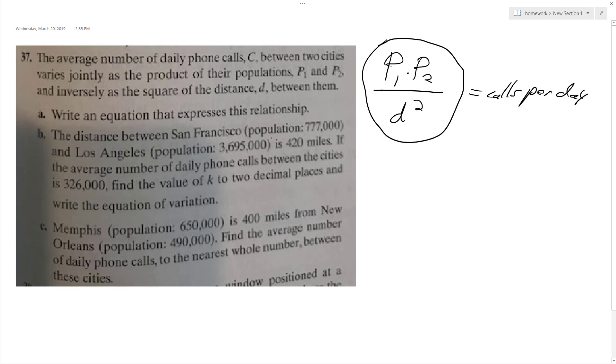So then the distance between San Francisco and Los Angeles is 420 miles. The average number of phone calls between the cities is 326,000 to find the value of k. Alright, so we're looking for a constant here, so I can probably add a constant. So constant is going to be equal to k times 770,000 times 3,695,000 all over 420 squared.